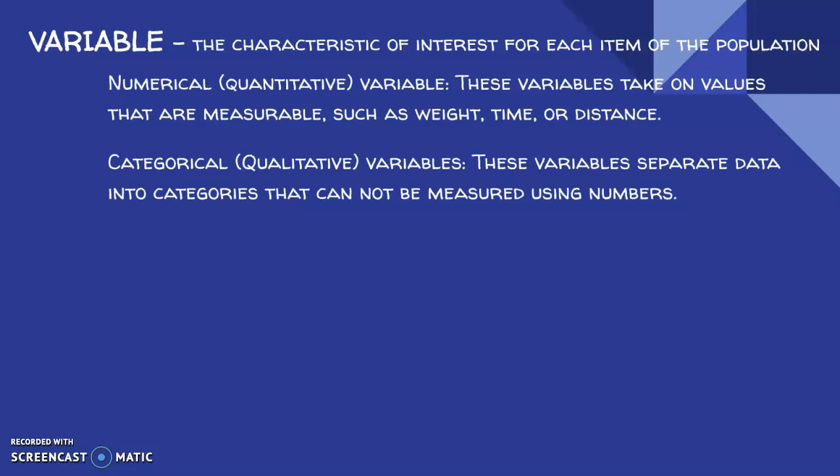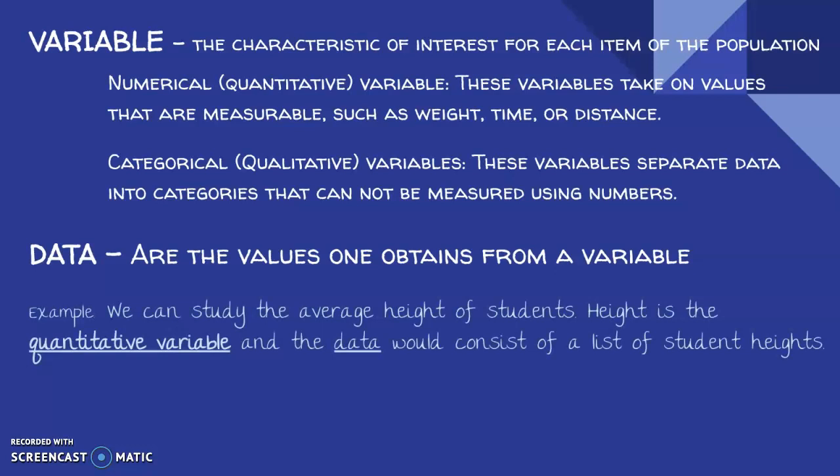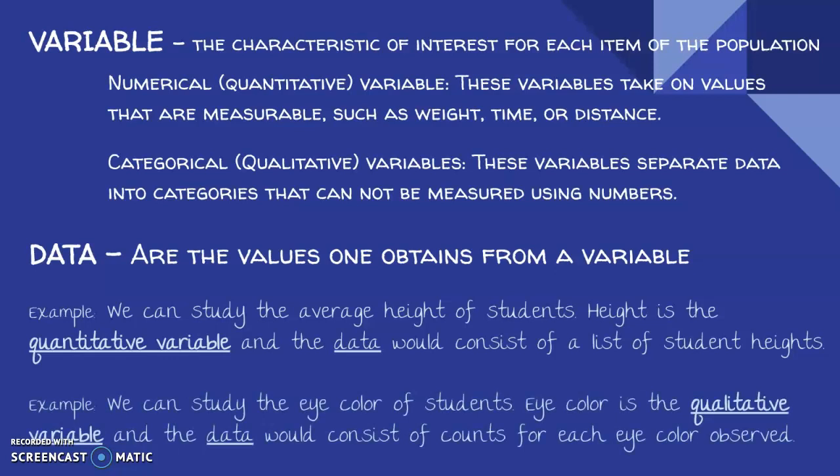So here's an example. We can study the average height of students, right? Height would be the quantitative variable because height is something we can measure. And the data would consist of a list of student heights. We can study eye color of students. In this case, eye color is a qualitative variable. And the data would consist of counts for each eye color or just observations that there are students with blue eyes, brown eyes, green eyes, etc.